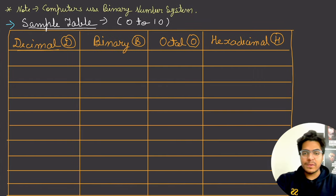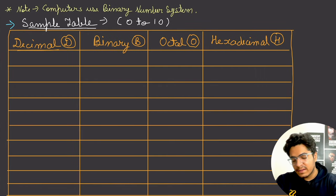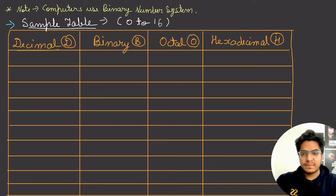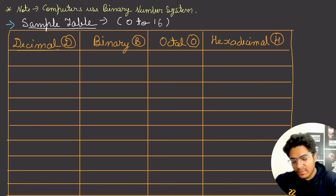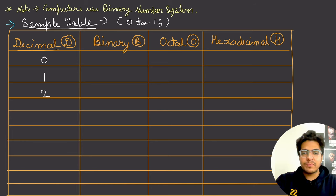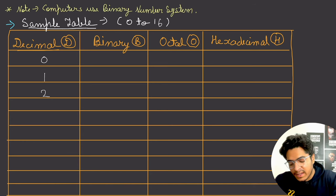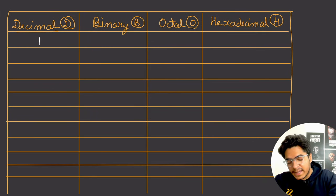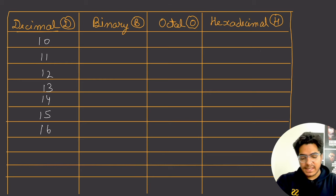Let's make a table from 0 to 16. In decimal, these are the normal numbers we use daily: 0, 1, 2, 3, 4, 5, 6, 7, 8, 9, 10, 11, 12, 13, 14, 15, 16. Understanding up to 16 is sufficient.